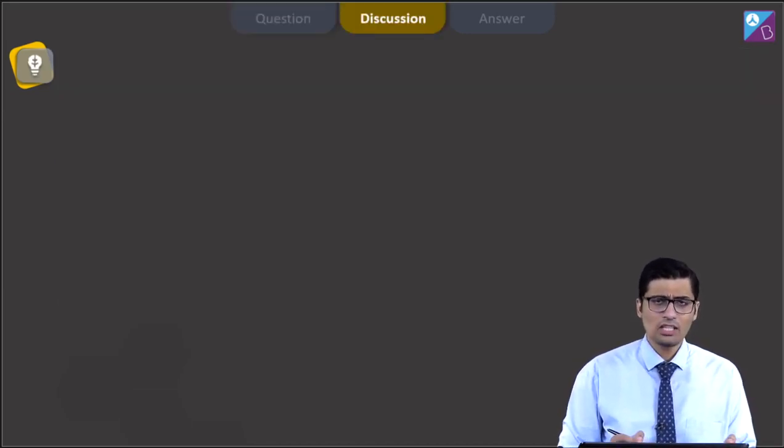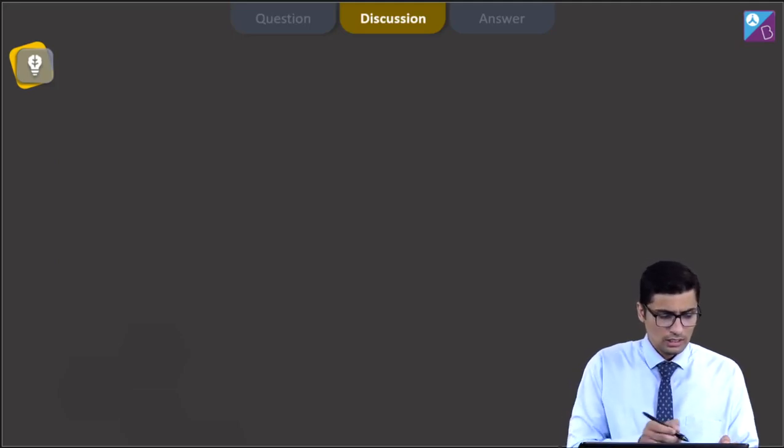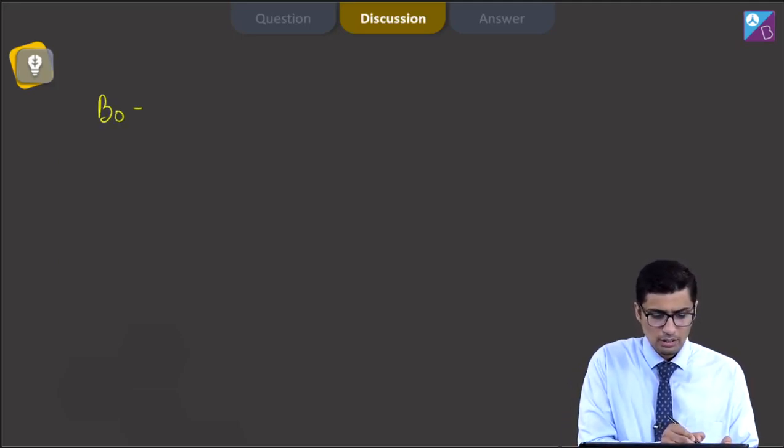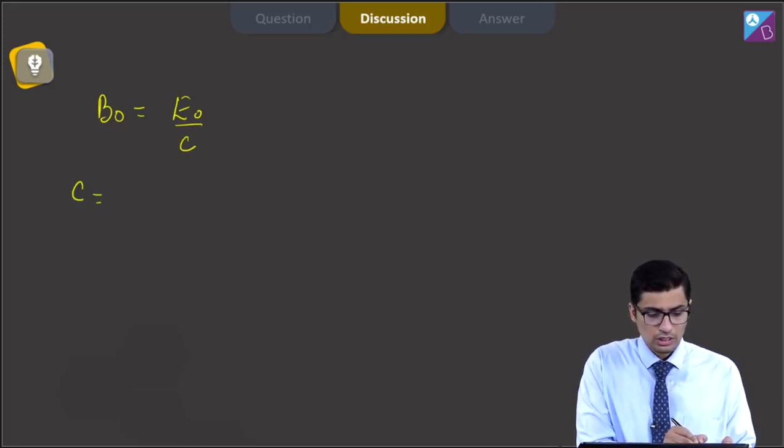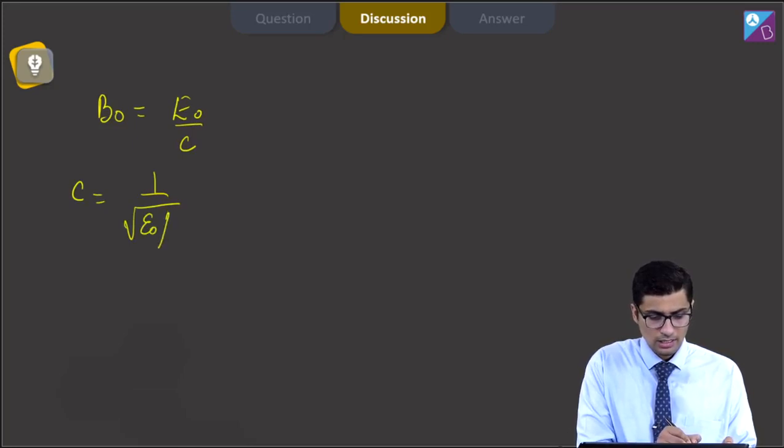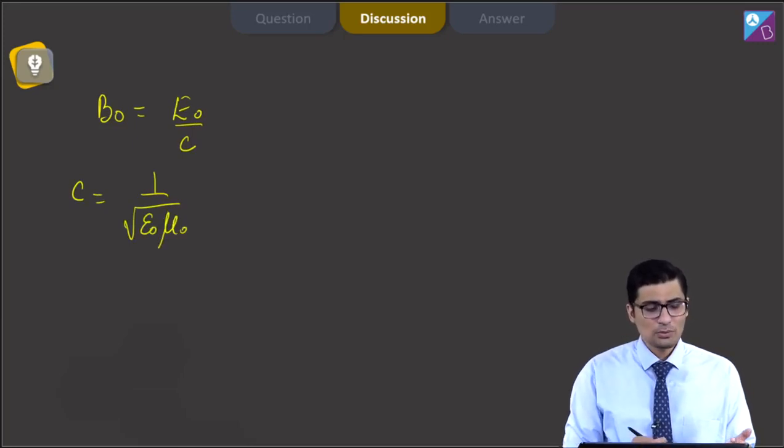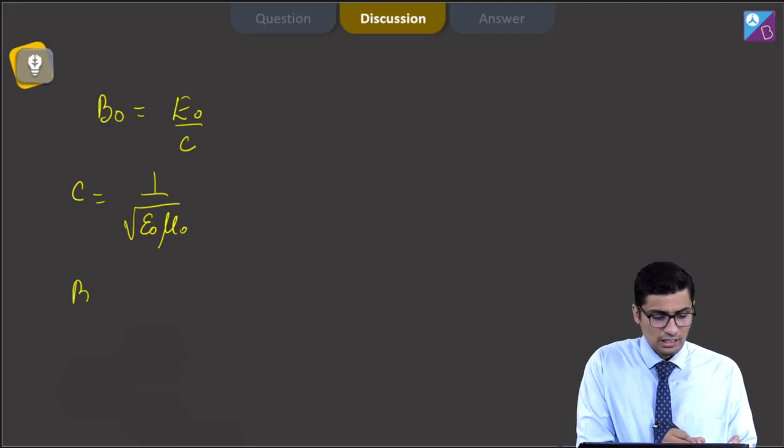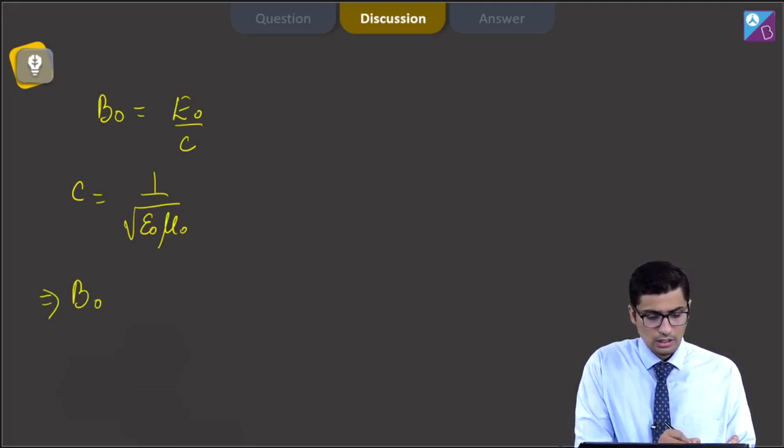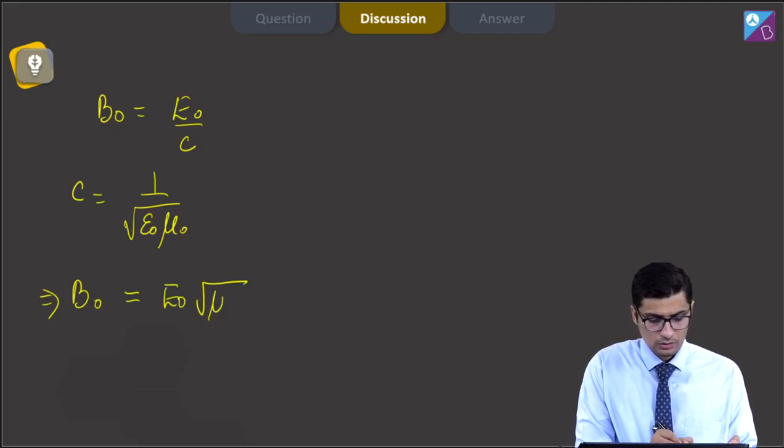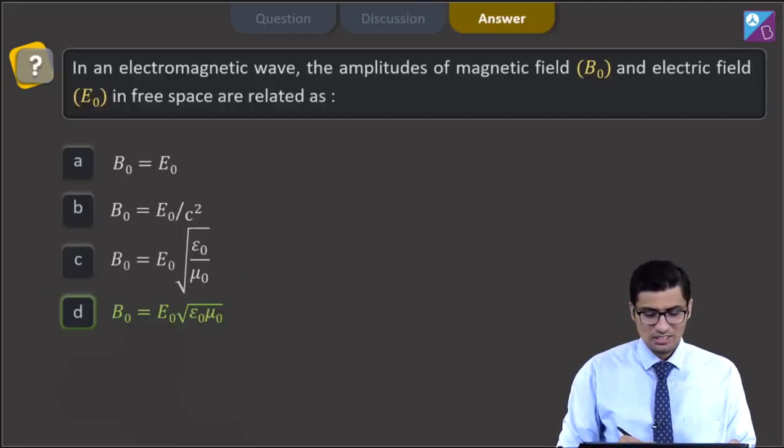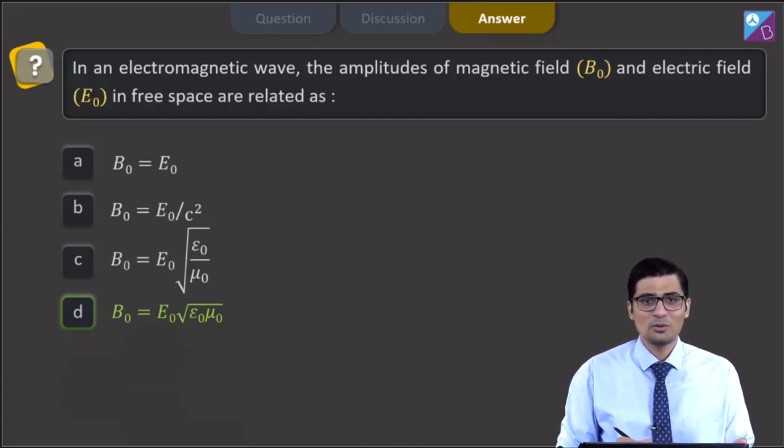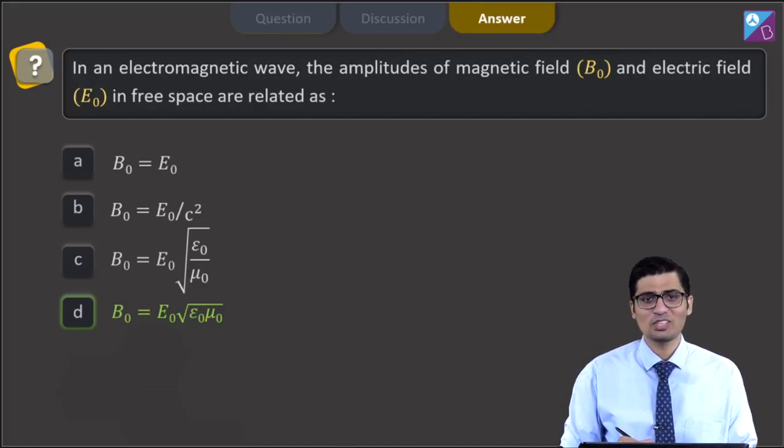Dear students, from the properties of electromagnetic waves, we must know that B0 can be written to be equal to E0 by C. Also, C is equal to 1 by root epsilon 0 mu0. If we substitute the value of C in the first expression, we can get that B0 is equal to E0 into root mu0 epsilon 0. Hence, for this question, the correct answer is option D. Now let us move to the next question.